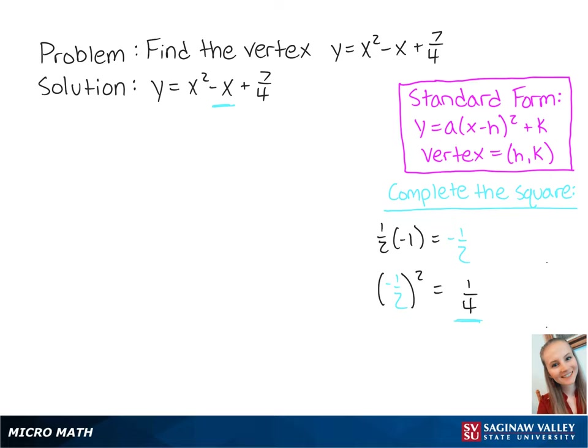Now we can manipulate our equation to give us y = x² - x + 1/4 + 6/4. Now we can complete the square and reduce this fraction to give us y = (x - 1/2)² + 3/2.